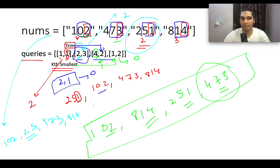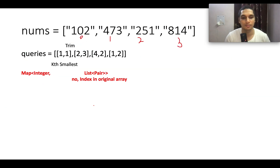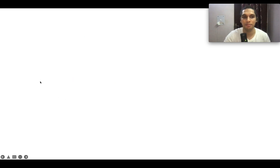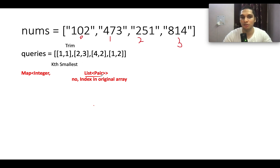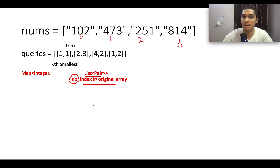The final answer array is [2, 2, 1, 0], which matches the expected output. Now, how do we solve this efficiently? We'll use a map. The key of the map is the possible trim values (1 through the length of the numbers, in this case 1, 2, and 3). The value in the map is a list of pairs, where each pair holds the trimmed substring used for sorting and the index at which the number occurs in the original array.